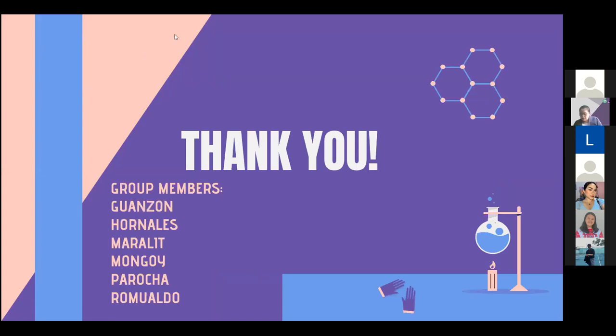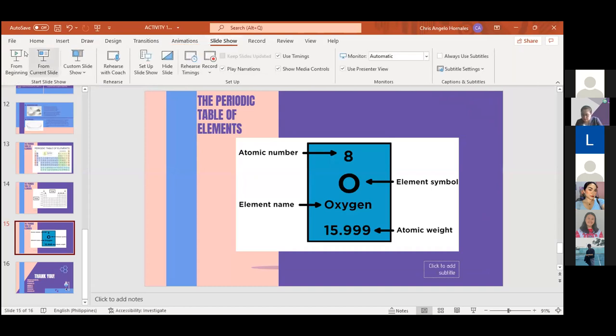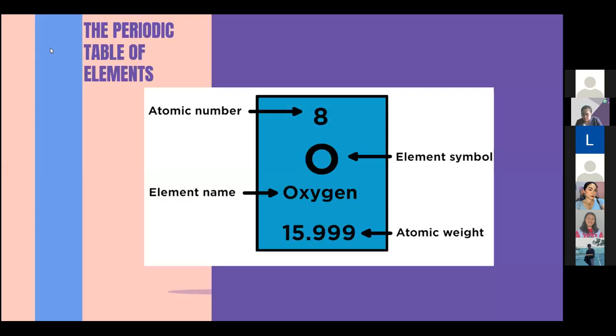The atomic number. The number at the top of each element box is the number of protons in the nucleus and the number of electrons in the atom. The element symbol is an abbreviation of the element name. Some periodic tables do not include the element names and only the symbols. The atomic weight. The atomic weight is the average mass of the element's isotopes. It is the average number of all the protons and neutrons in the nucleus. Generally the atomic mass increases as you move down or across each group or period. That would be all, thank you.